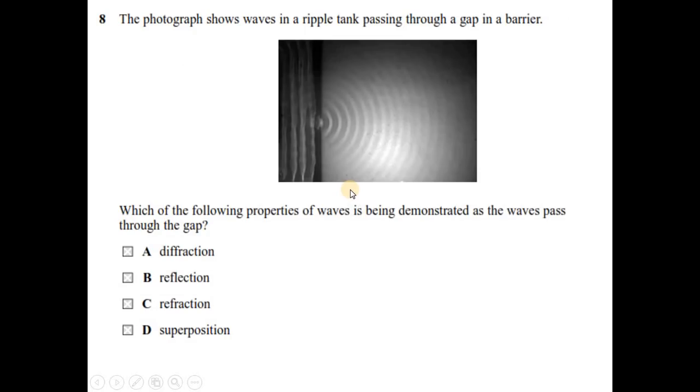Question number 8. The photograph shows waves in a ripple tank passing through a gap in the barrier. Which of the following properties of wave is being demonstrated as the wave passes through the gap? It is a typical diagram. Wave is passing through a gap, and after passing through it is being diffracted. So this is the phenomenon of diffraction.